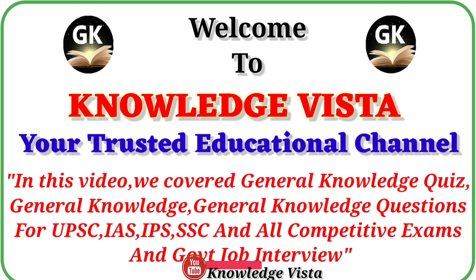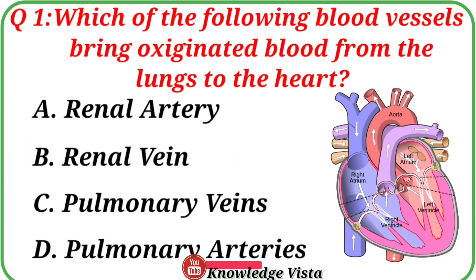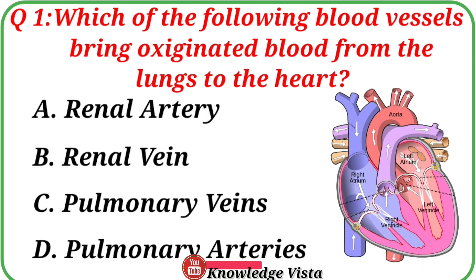Question No. 1. Which of the following blood vessels bring oxygenated blood from the lungs to the heart? Your options are: A. Renal artery, B. Renal vein, C. Pulmonary veins, D. Pulmonary arteries. Correct answer is option C: Pulmonary veins.